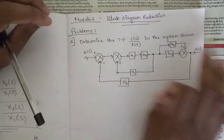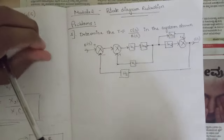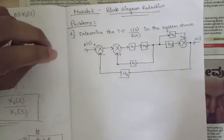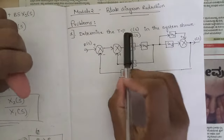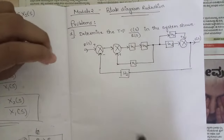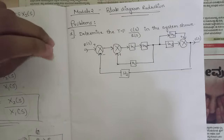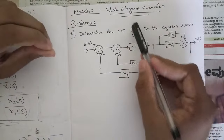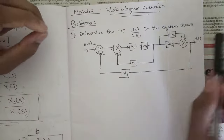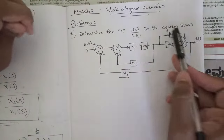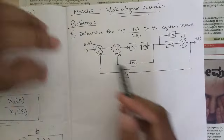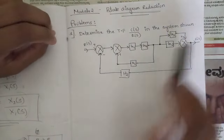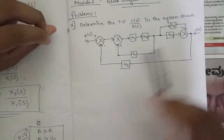Before that, we have one simple block diagram here that we need to reduce into a simple block in order to get the relation between the input and output — that is the transfer function. The transfer function is the relationship between the output and input, that is C(s) by R(s). This is the output side and this is the input side.